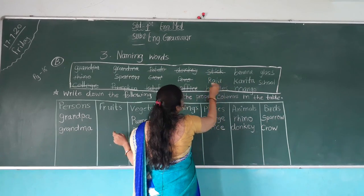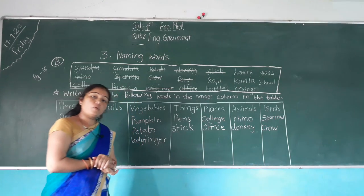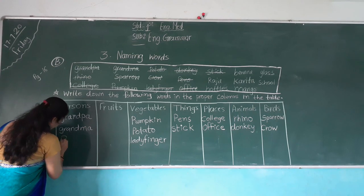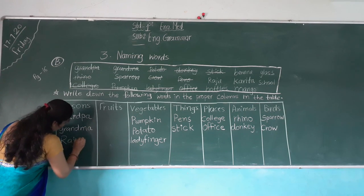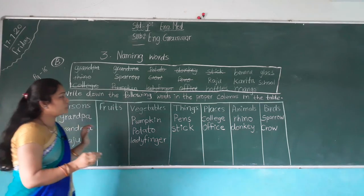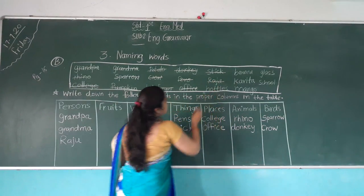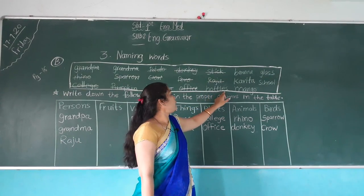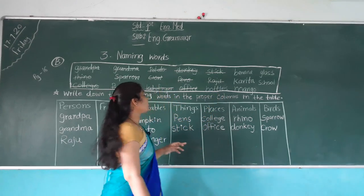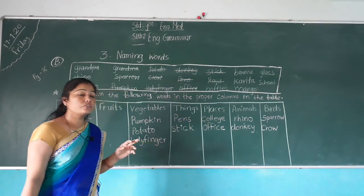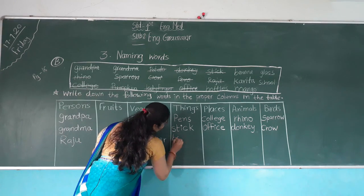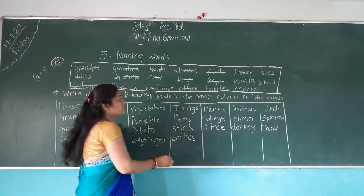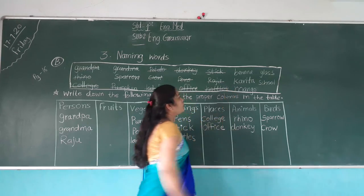R-A-J-U — Raju. Raju is the name of a person, so where do we write it? In the person column — R-A-J-U. Cut it. Read this spelling — B-O-T-T-L-E-S — Bottles. Bottles is a name of things — B-O-T-T-L-E-S — and cut it.